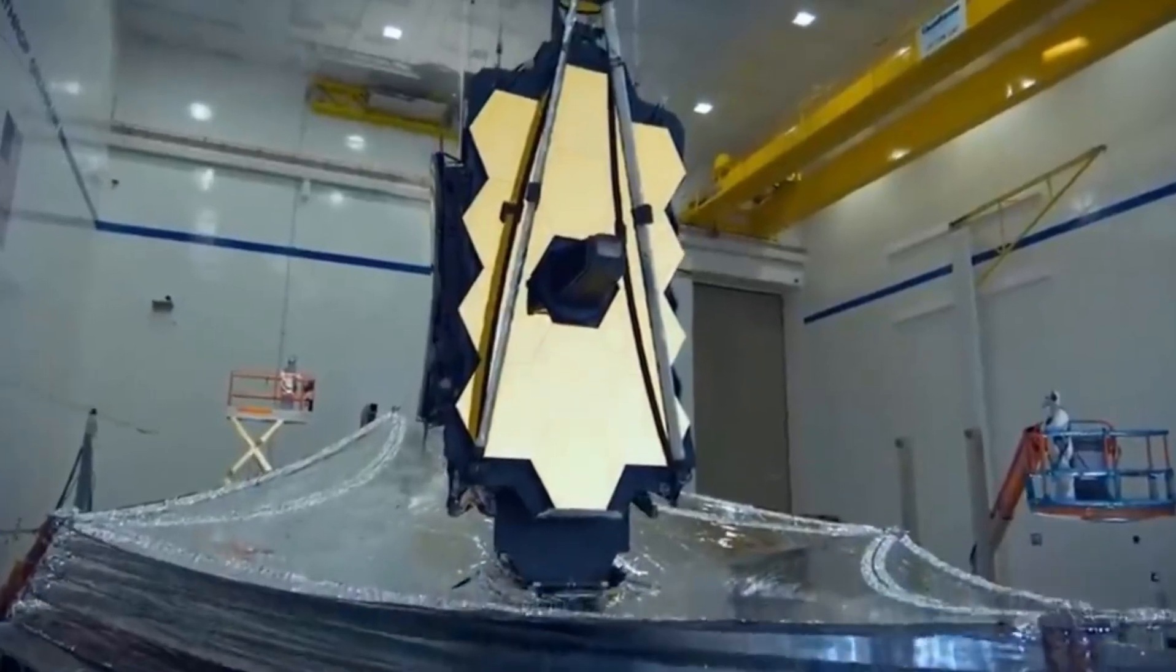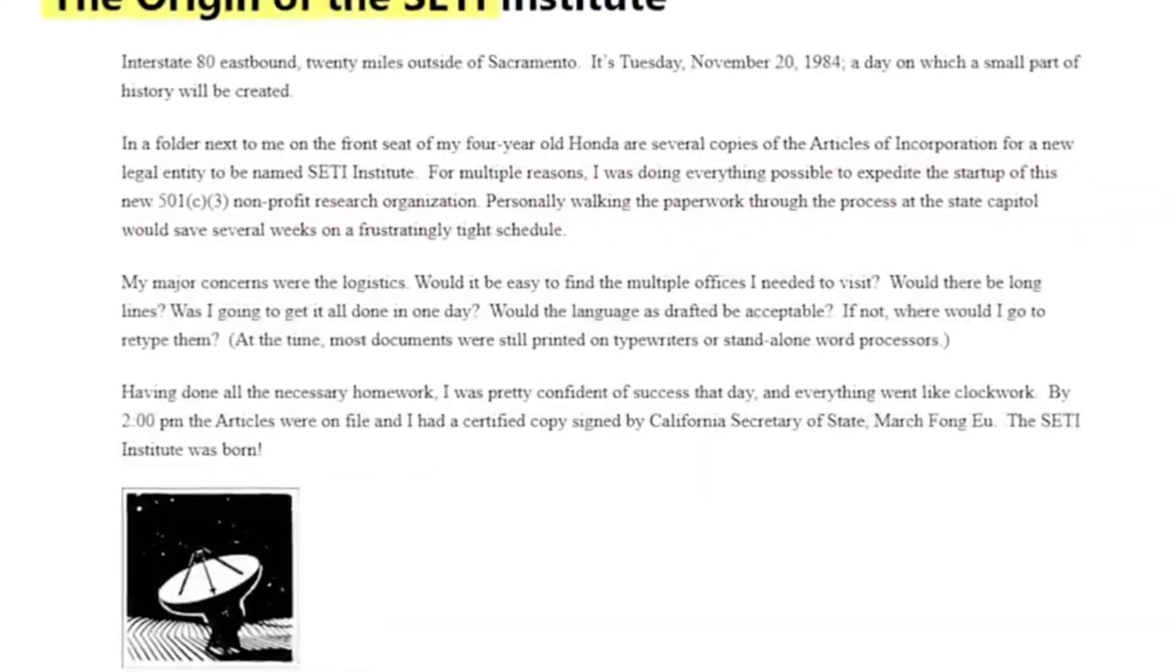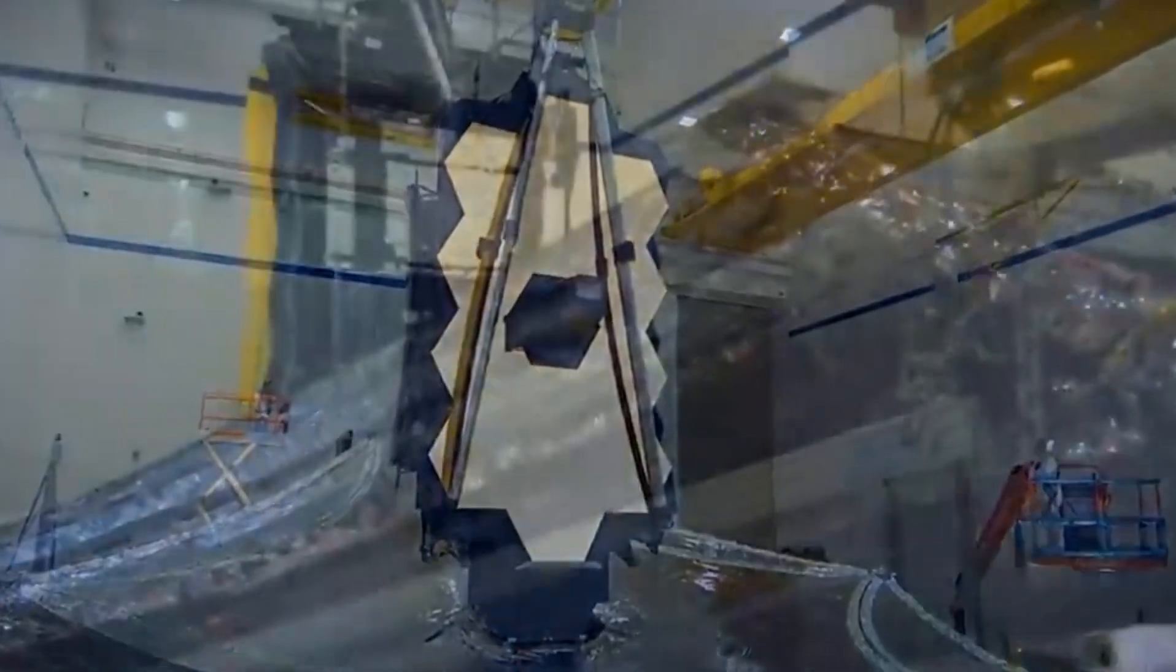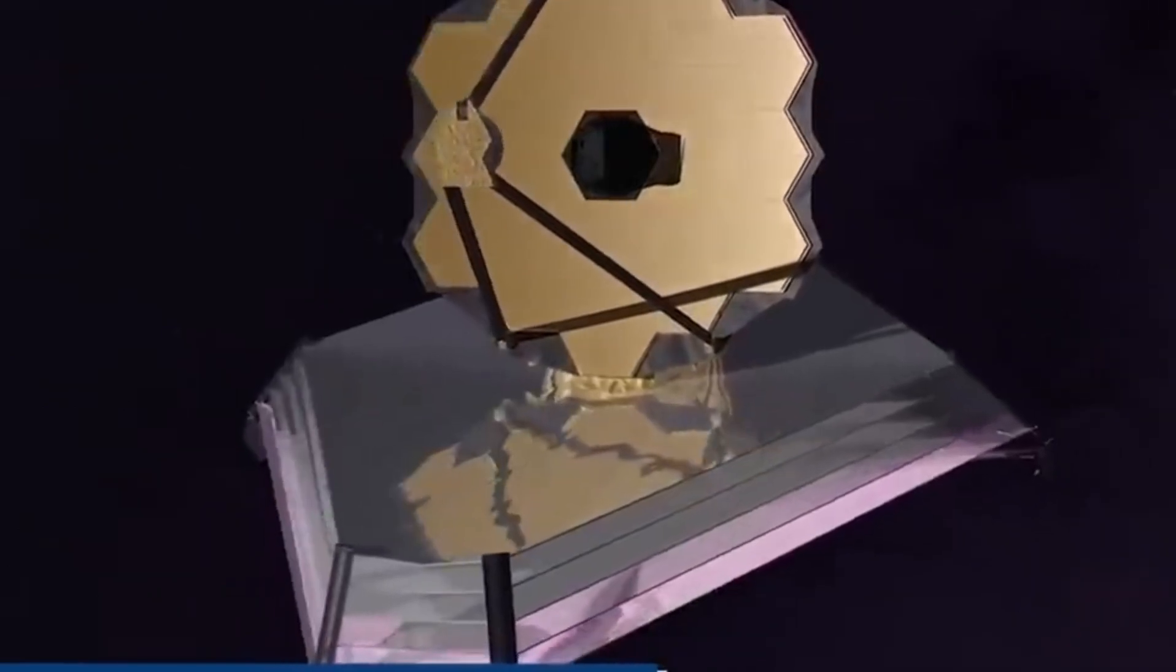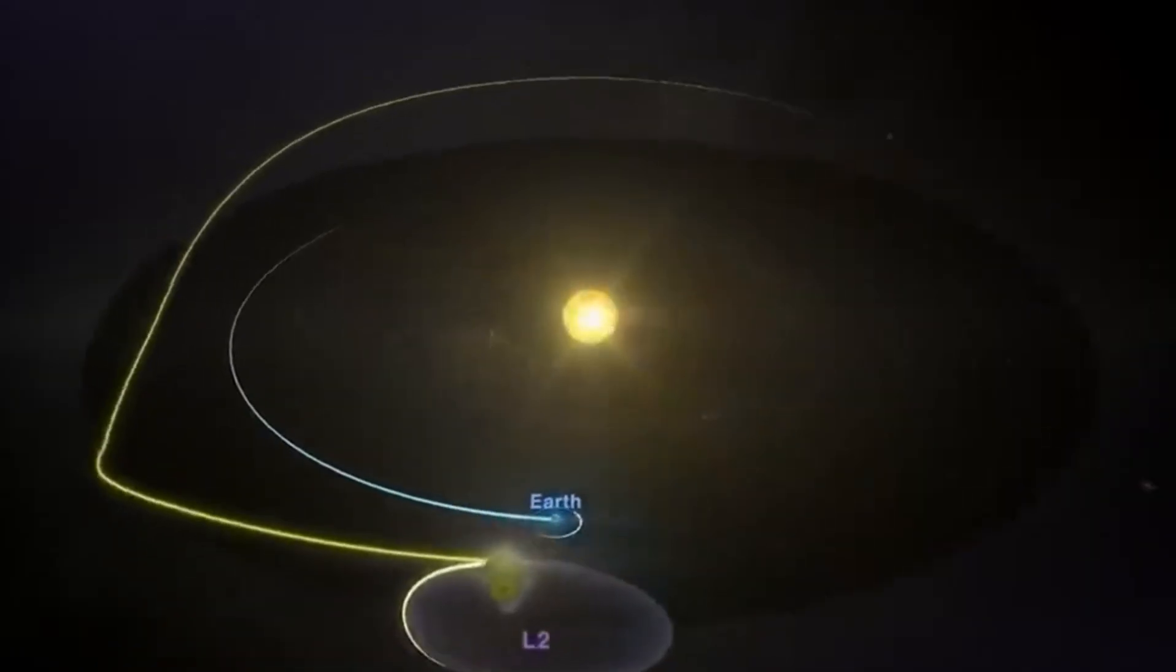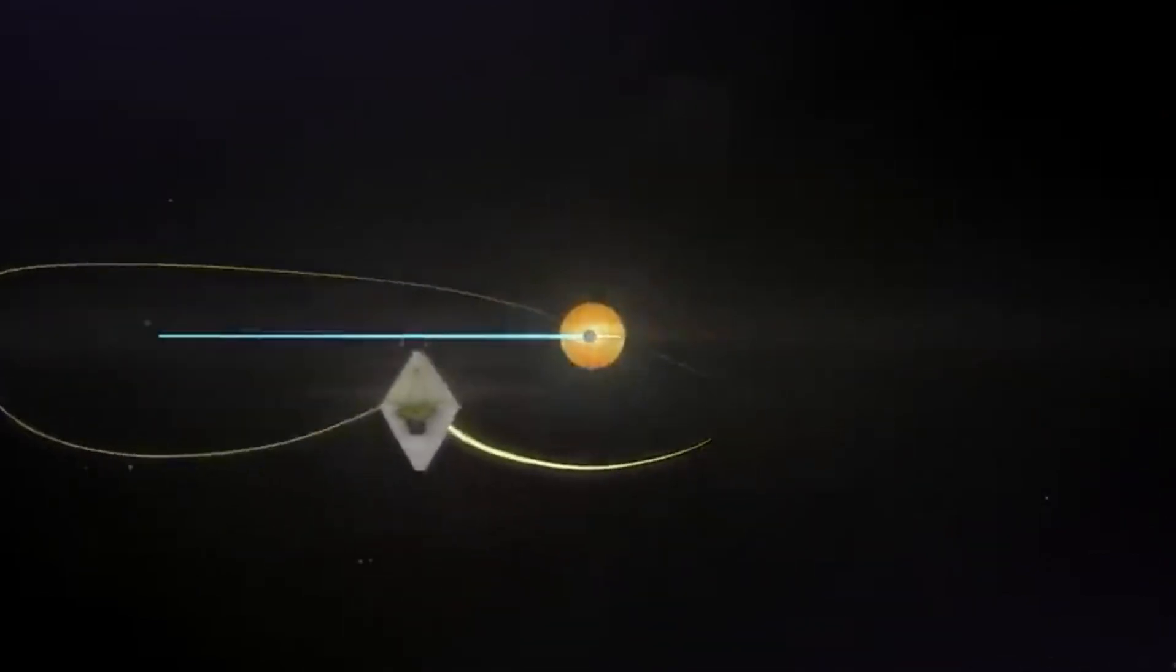The James Webb Telescope, representing a colossal scientific endeavor, is equipped with sophisticated technology developed over 30 years at a cost of $10 billion. While capable of observing a broad range of celestial phenomena, its primary objective is to study the light from the universe's first stars, marking a pivotal moment in cosmic history.